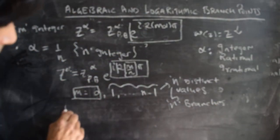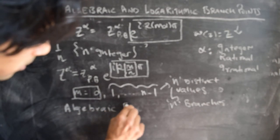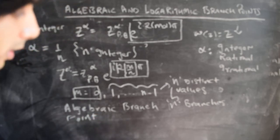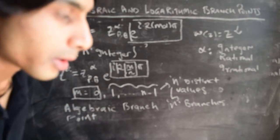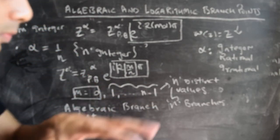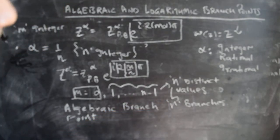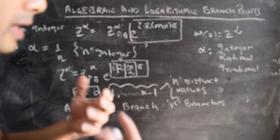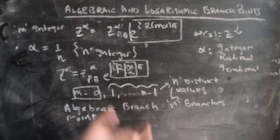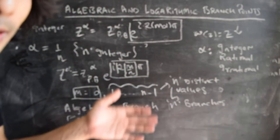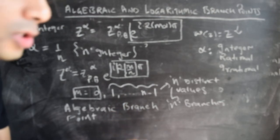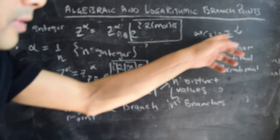This gives rise to an algebraic branch point because there are a finite number of branches — n branches — making it an algebraic branch point of order n−1. This generalizes the case when alpha is 1 over 3 (i.e., n equals 3), where we found three distinct values or three different branches of the function. Notice how this comes about simply by using the definition of the complex log and raising it to the power of alpha.